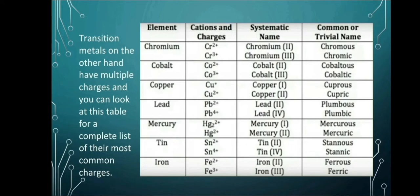Transition metals can have multiple charges. You can look at this table. Transition metals have multiple charges, and you can look at this table for a complete list of their most common charges. Like chromium, it has two isotopes, chromium 2 and chromium 3. Chromium 2 is read as chromous, and the chromium 3 is called chromic. And cobalt that has isotopes 2 and 3, it is called cobaltous if it is 2+ and cobaltic if it has 3+ electrons.